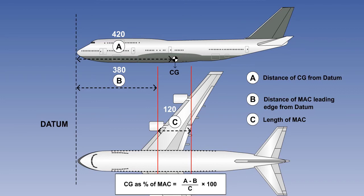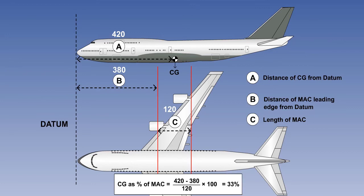Write down the formula for calculating the centre of gravity as Mean Aerodynamic Chord. We can now enter the values: A is 420, B is 380, and C is 120. Resolving the equation shows us that the centre of gravity as a percentage of Mean Aerodynamic Chord is 33%.